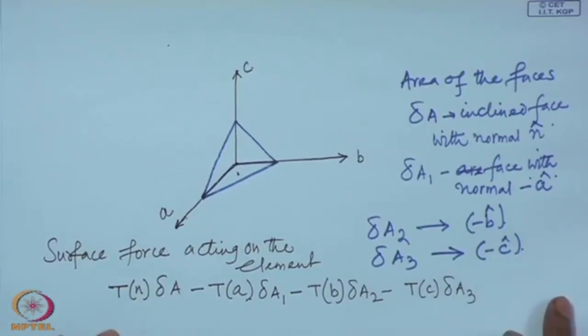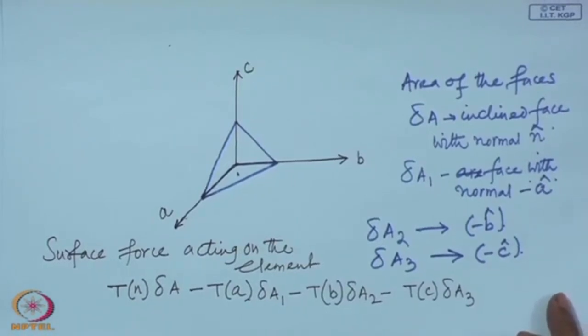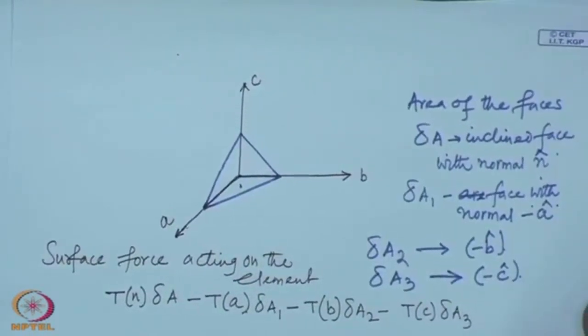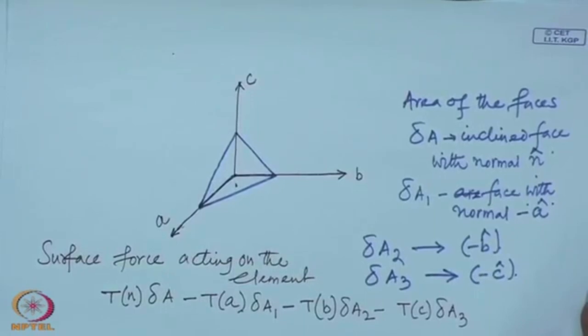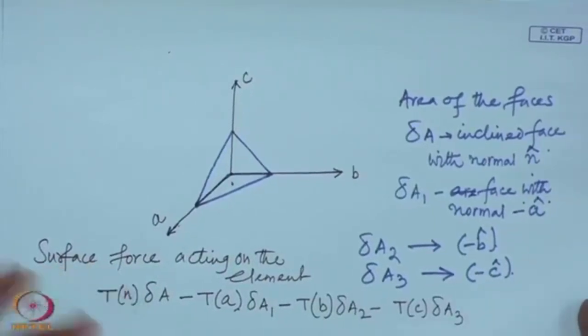Now, can we express delta A1, delta A2, and delta A3 in terms of delta A? Delta A1, delta A2, and delta A3 are the projections of the inclined area delta A onto the three coordinate planes. So how can we write delta A1? What is delta A1 as an example?